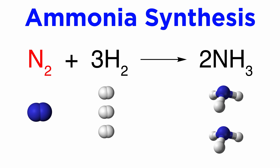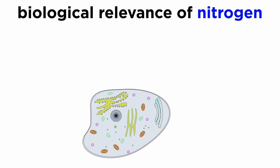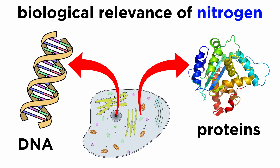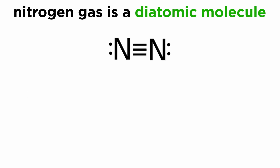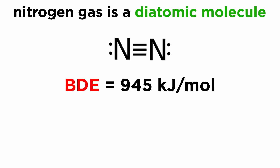As we know, living organisms require nitrogen to biosynthesize key biopolymers like proteins and nucleic acids. The single most abundant source of nitrogen on earth is nitrogen gas, which makes up slightly over three-fourths of the air we breathe. Unfortunately, most living organisms are unable to utilize this source of nitrogen. The molecule consists of two atoms of nitrogen bound by a triple bond, and has a bond dissociation energy of 945 kilojoules per mole, which makes it one of the strongest bonds we know.